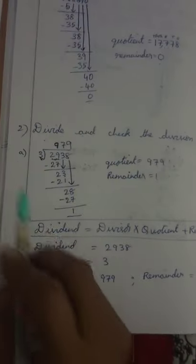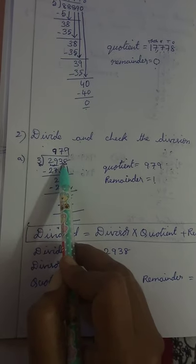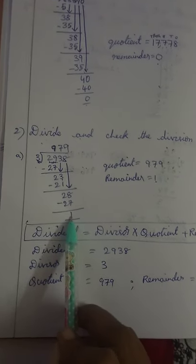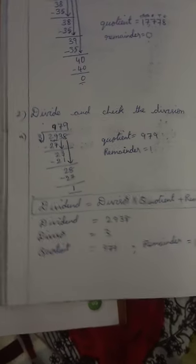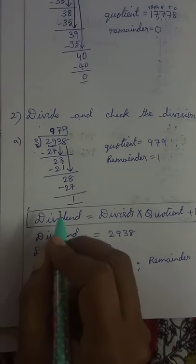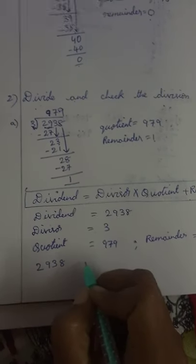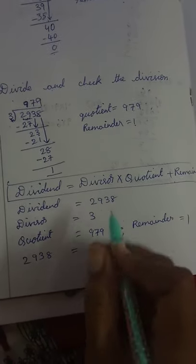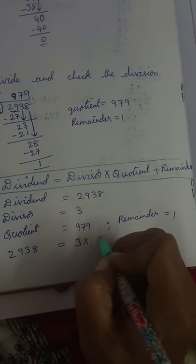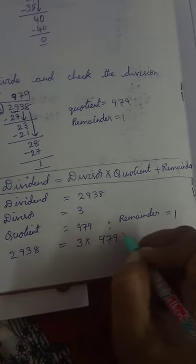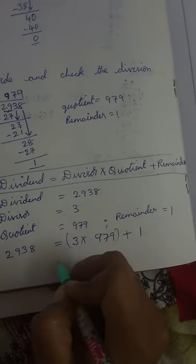Now substitute the values in this formula. On the left we have the dividend, and we use the divisor, quotient, and remainder in the formula. Dividend 2938 equals divisor 3 into quotient 979 plus remainder. First we multiply.